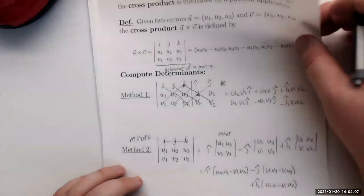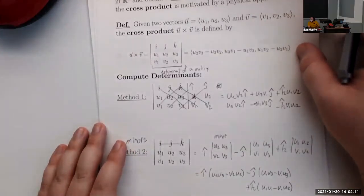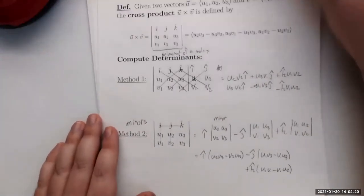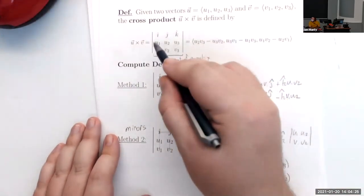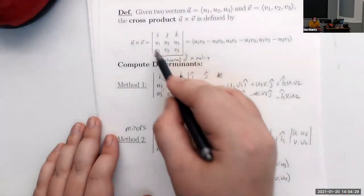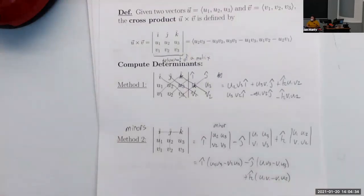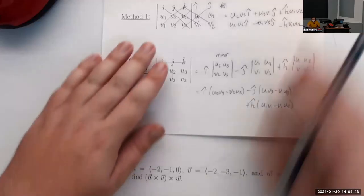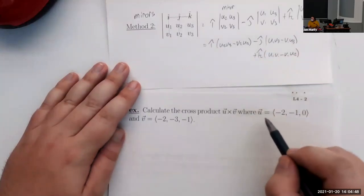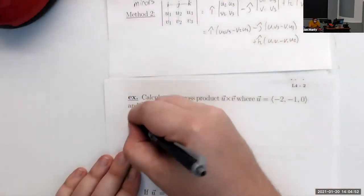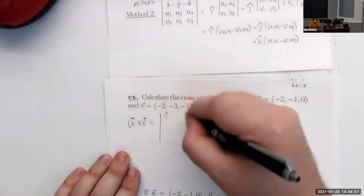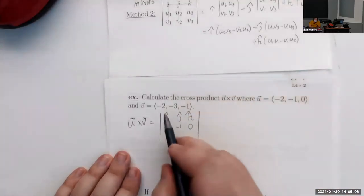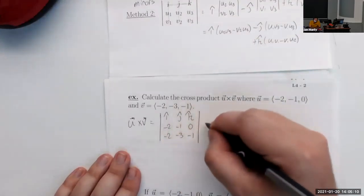Let's see a concrete example. Calculate the cross product u × v, where u and v are the given vectors. We always put î, ĵ, k̂ in the top row, then the components of u across the middle row, and the components of v in the bottom row. I'm most comfortable using the minors method.